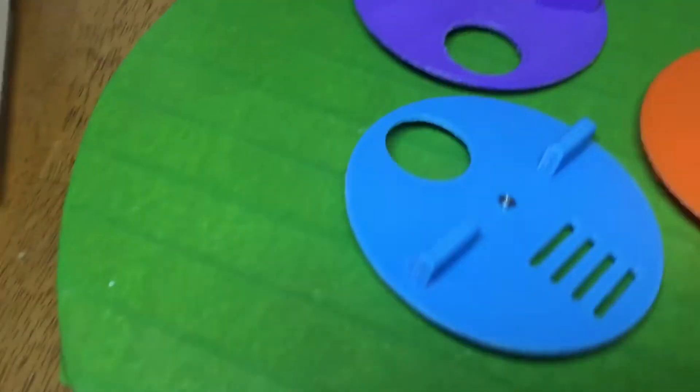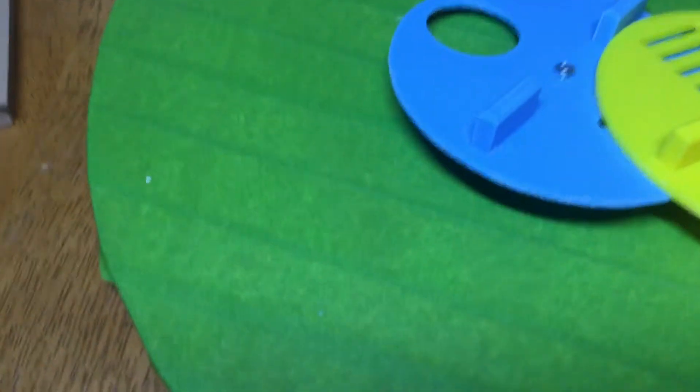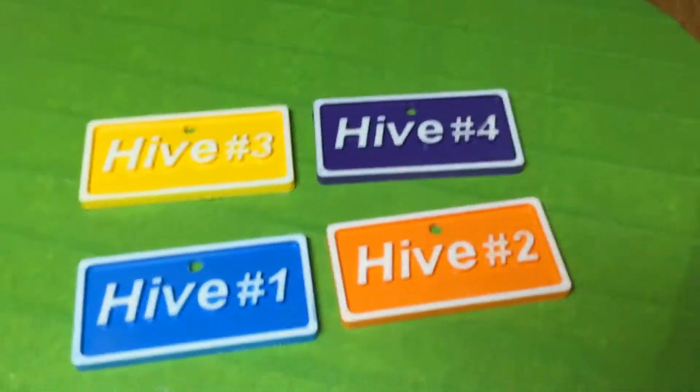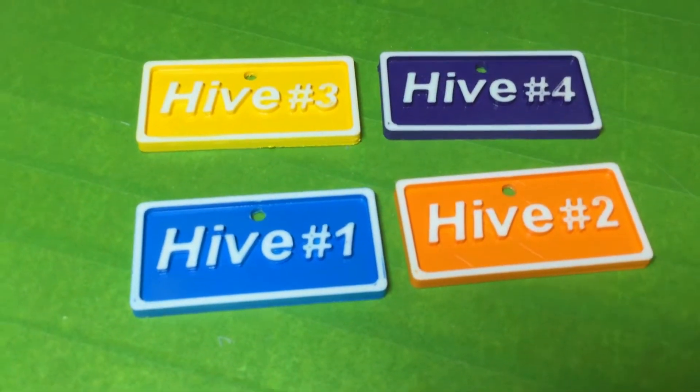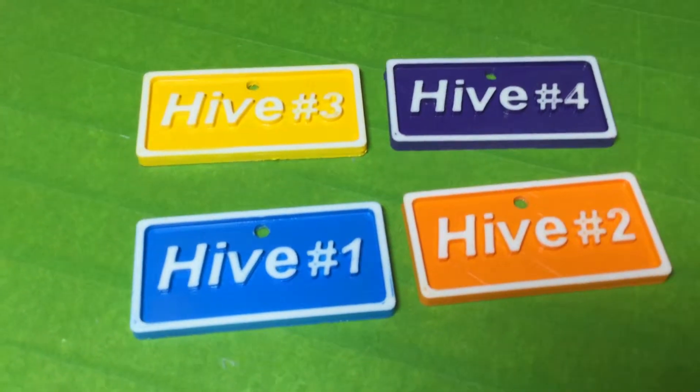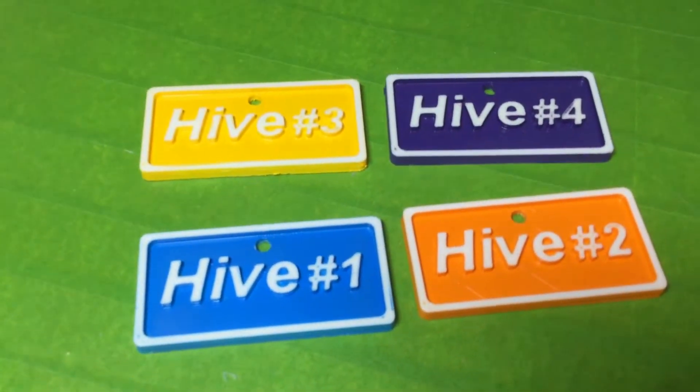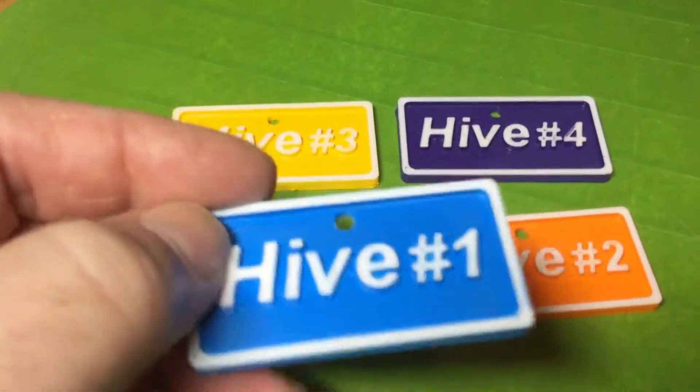So last but not least, I've learned how to build 3D text into my 3D designs and so I printed out these little hive markers. I printed them in a white plastic and then I spray painted them and then put a clear coat over them and then used a bit of really fine sandpaper to clean the paint off of the actual lettering and the outside rim.